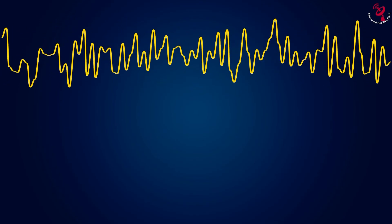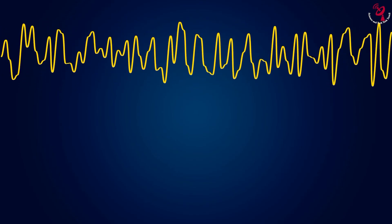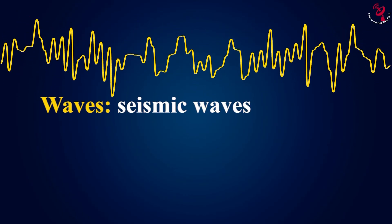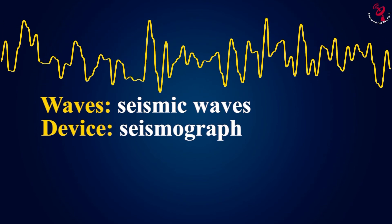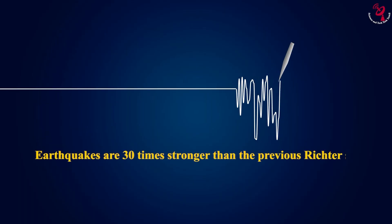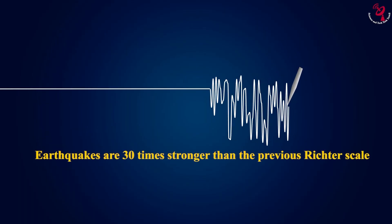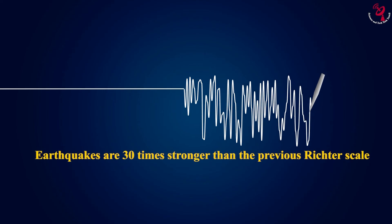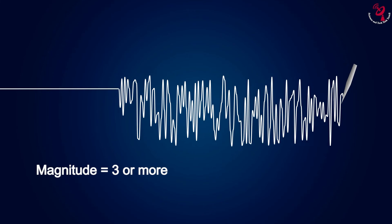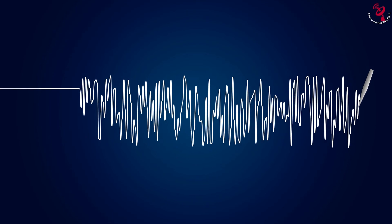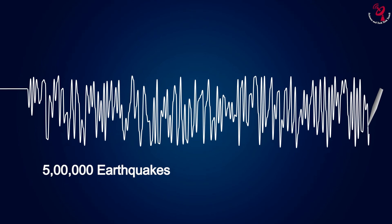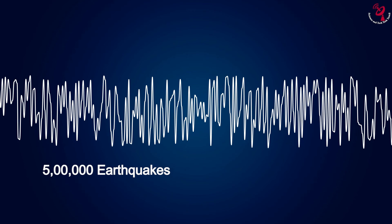Measuring Earthquake. Waves that are produced by an earthquake are called seismic waves. A seismograph is a device used to measure these waves. These waves are measured on a scale called the Richter scale. Each increasing Richter number shows that earthquakes are 30 times stronger than the previous number. An earthquake is noticed when its magnitude is 3 or more on the Richter scale. Below this number you won't notice any shake caused by an earthquake. It is estimated that there are 500,000 earthquakes every year around the globe, but only a few of them cause any damage.